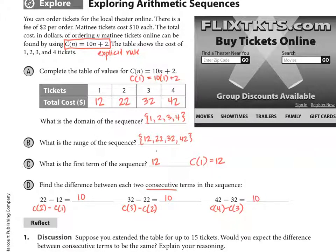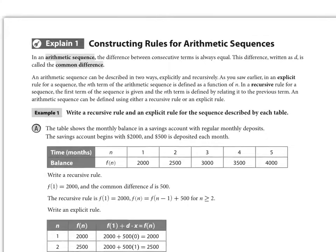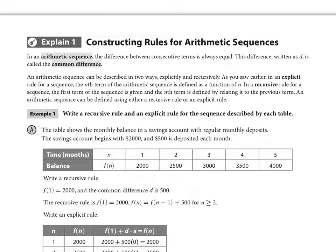So this is a closer look at the sequences. In an arithmetic sequence, the difference between consecutive terms is always equal. The difference, written as D, is called the common difference. Now we have a name for why we were subtracting those consecutive terms — we call that a common difference.